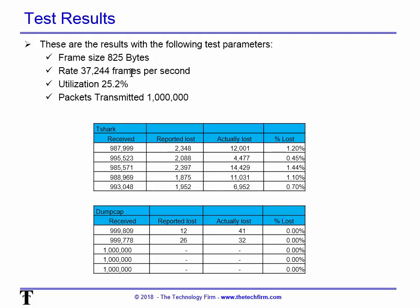At 25% utilization — roughly double — we have 37,000 frames per second. You can see the received and lost numbers went up, probably proportionately. And DumpCap shows a little crack in its armor: it lost a couple, two out of five times. Going up to 50% — the point at which people would probably stop using laptops and move to a hardware-based tool — same 825 bytes, 74,000 frames per second. Again two out of five times DumpCap dropped some. But generally speaking, DumpCap outperformed T-Shark.